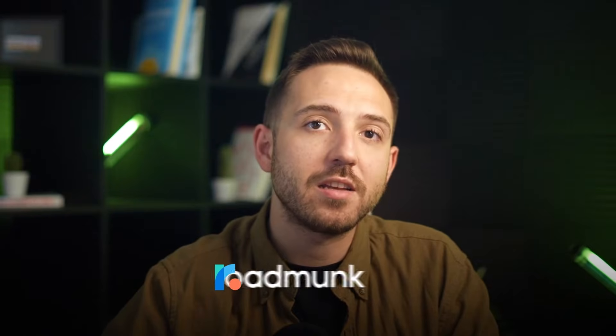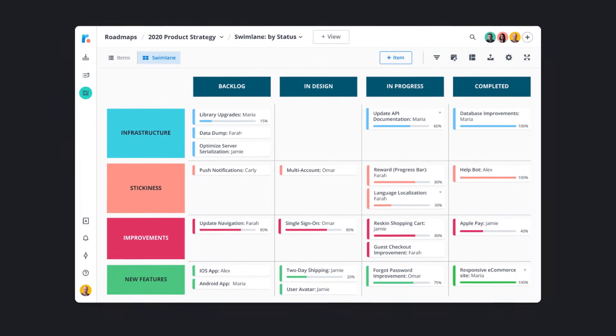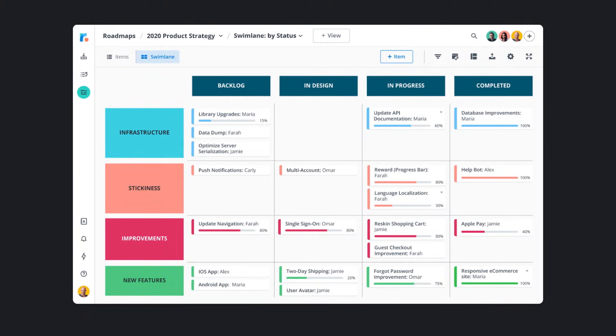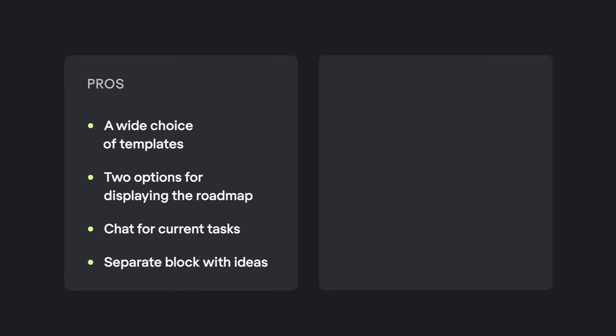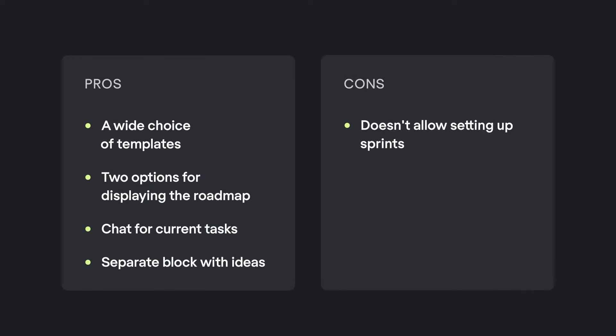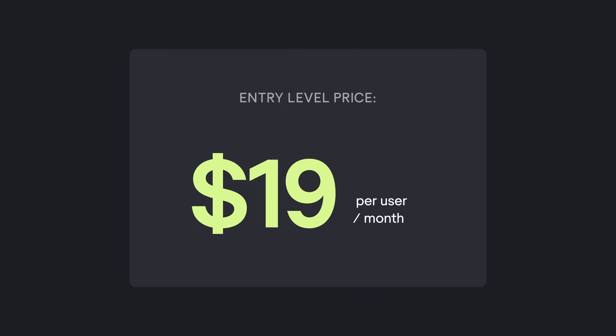Roadmonk is a convenient application which contains a lot of templates for different purposes — portfolio development, IT product, general strategy, etc. There are several options for displaying the roadmap, and a 14-day trial is available. Advantages: a wide choice of templates, two options for displaying the roadmap, chat for current tasks, separate blog with ideas. Disadvantages: doesn't allow setting up sprints, multiple milestones and projects can visually overlap and make the roadmap difficult to read. Entry level price: $19 per user per month.